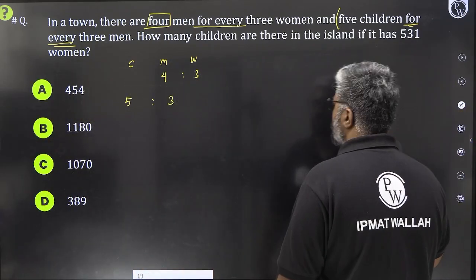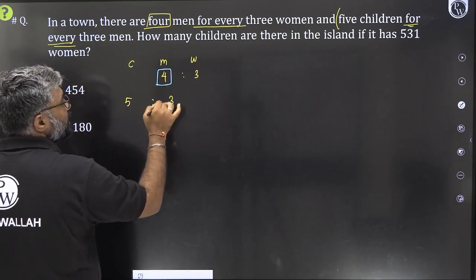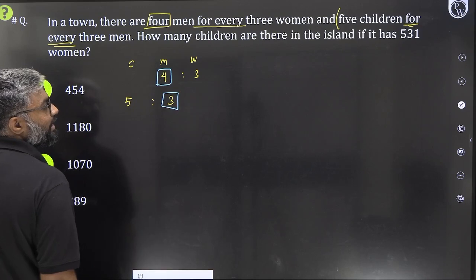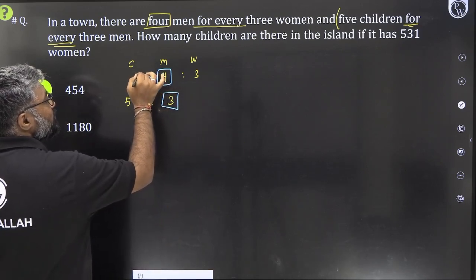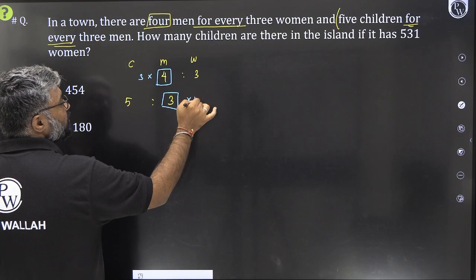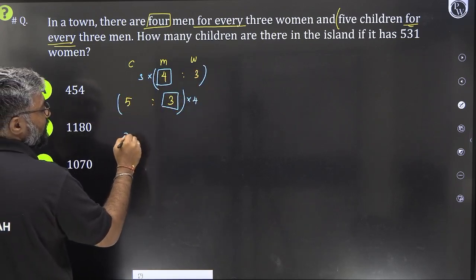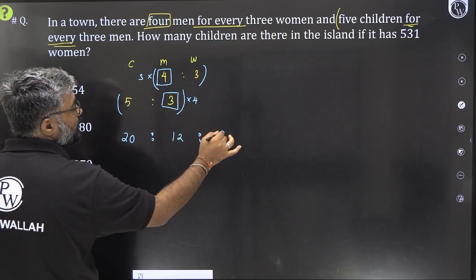What do we do? First, we combine this ratio. Let's combine this ratio. We see 4 here, 3 here, the middle term. They are both unequal. So we make it equal by taking the LCM. 4 or 3 ka LCM kya hai? 12. Ye kaise aaya? Isko 3 se multiply karne pe, isko 4 se multiply karne pe. So isko jab main 4 se multiply karunga, C becomes 20. This is 12. This will be 3 into 3, 9. So for children, men and women, this is the ratio.